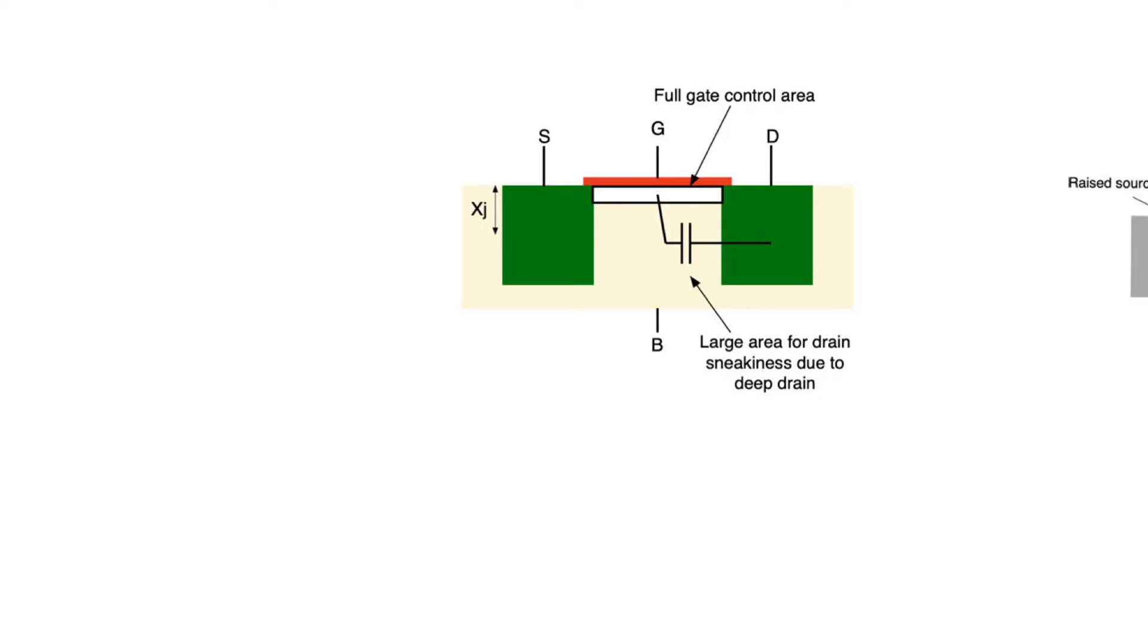Now one way we can combat drain-induced barrier lowering is by decreasing T-oxide, because if we decrease T-oxide we make the gate closer to the channel. This allows it to control the channel more properly and it increases the value of C-oxide relative to C-D and C-dap and thus manages to control sub-threshold conduction a bit more.